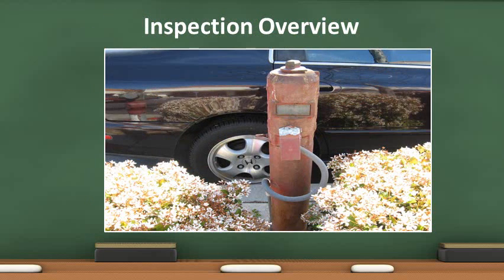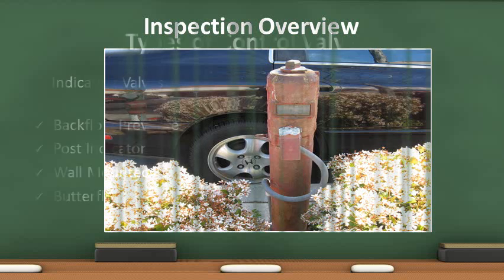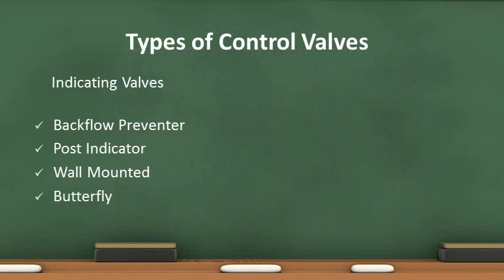In this portion of the presentation, we'll explain sprinkler system components and discrepancies to look for. Control valves shut off water to the sprinkler systems. They're also called indicating valves, as they have a physical feature that indicates whether they are in the open or shut position. Detailed descriptions will be given in the following slides to help identify indicating valves.